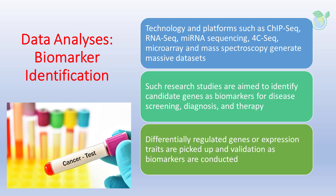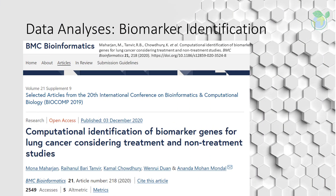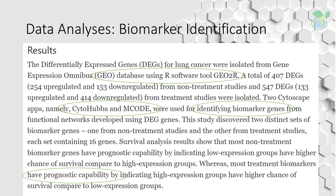Many research studies over the past decade have picked up important candidate biomarkers of interest to help facilitate disease screening, diagnosis and therapy. Researchers may often ask: What are the key players? What are the known interactions? What are the top pathways involved in the dataset? For instance, in one paper, computational identification of biomarker genes involved in cancer are identified from expression databases between control and reference groups. In another paper, differentially expressed genes were sorted using various tools such as R software tools and Cytoscape apps. Identified genes have value in their potential prognostic capabilities for further validation.